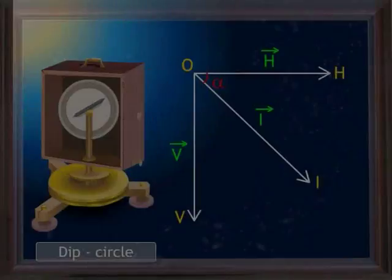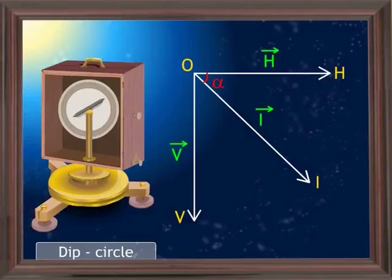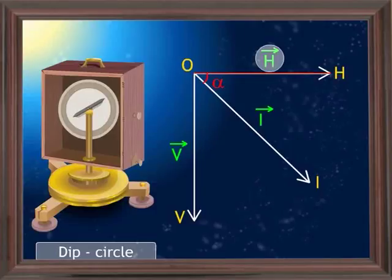The angle subtended between the direction of the total intensity of the earth's magnetic field I and the horizontal component H at a place is called the angle of dip or inclination. In the figure, OV represents the vertical component V, and OH represents the horizontal component H at a place.